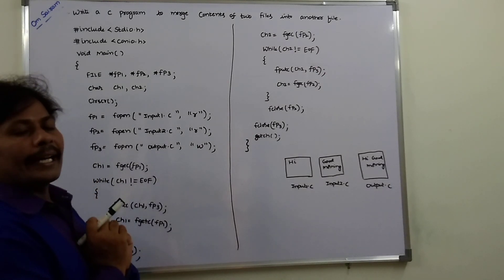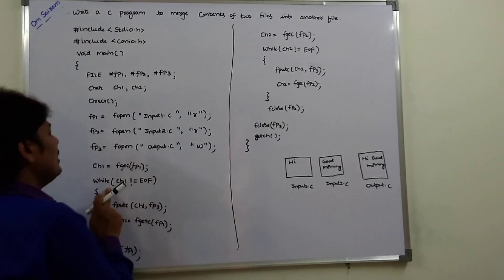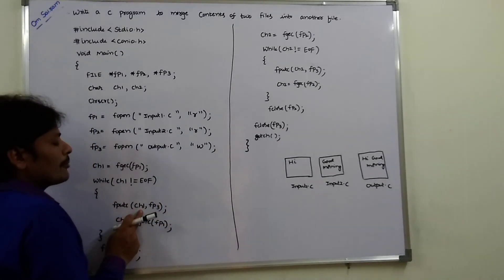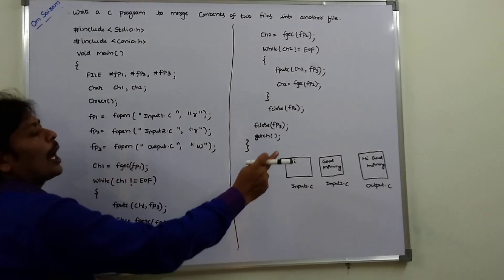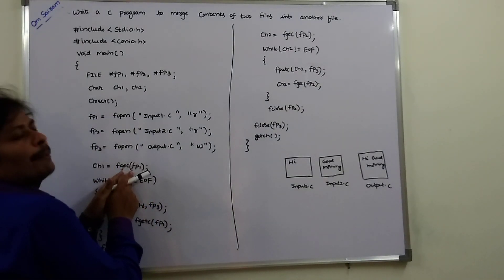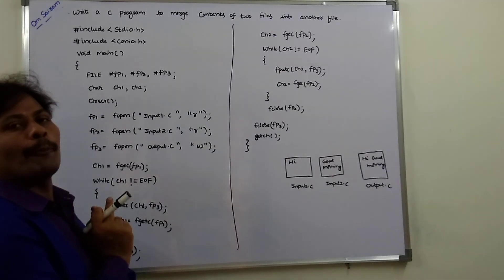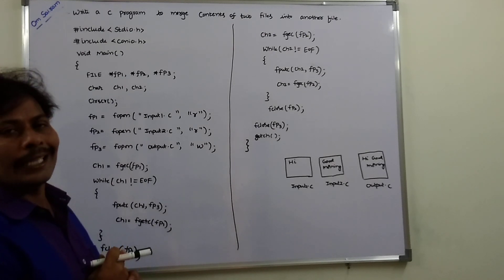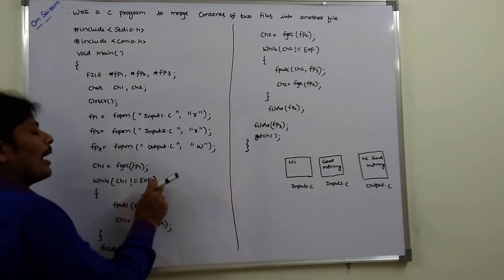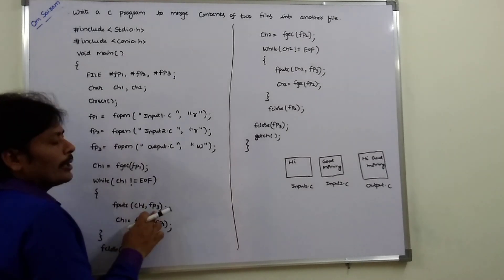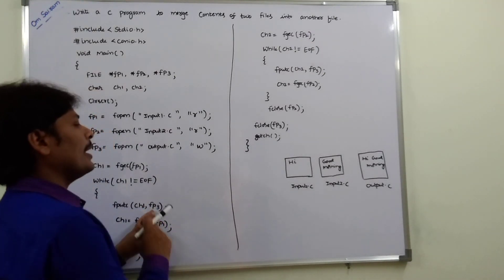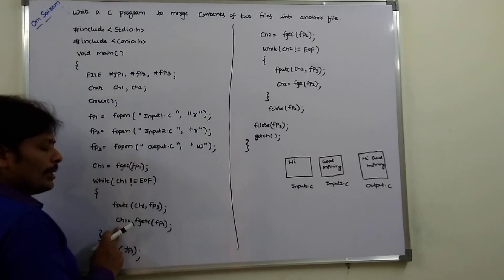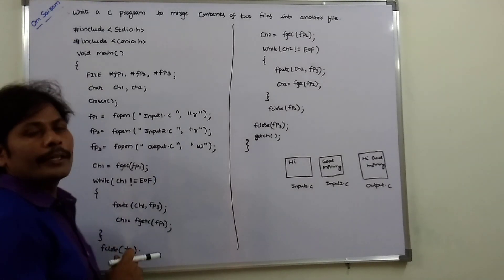Now check if the character ch1 is end of file or not. While ch1 is not equal to EOF — if it is not the end of the file — then fputc ch1 comma fp3. fp3 points to the output.c file. Whatever character is read by file pointer fp1 is assigned to ch1. If ch1 is not end of file, that character is written into fp3. Then we increment the file pointer: ch1 = fgetc of fp1. This procedure is repeated until end of file.